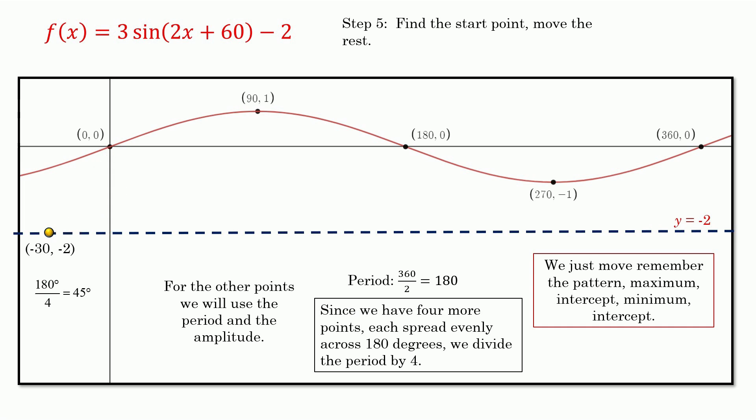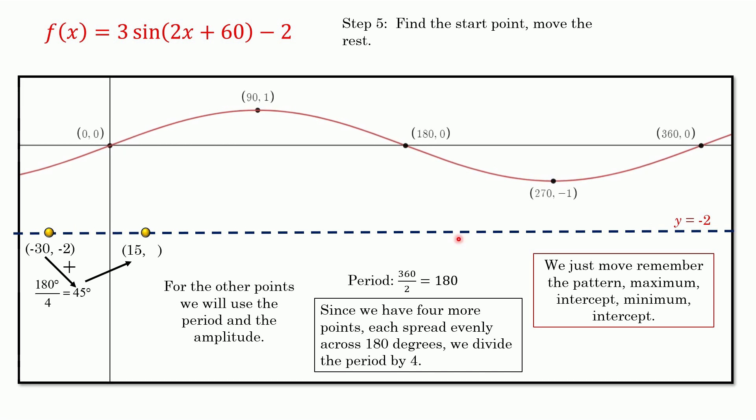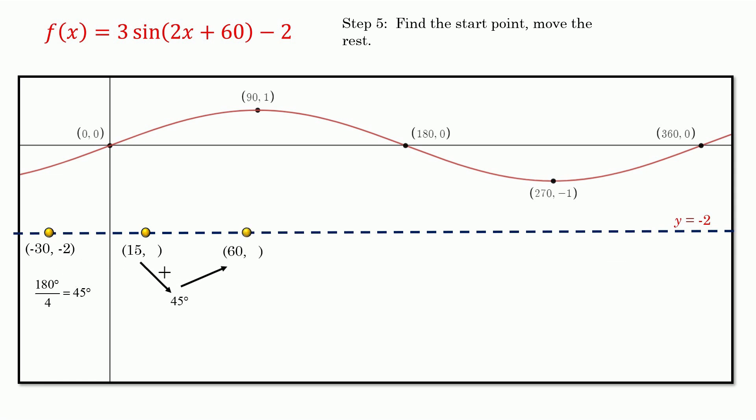You just take that first point, you just found the starting point, and you're going to add 45 degrees to the x. Negative 30 plus 45 is 15. Wash, rinse, repeat. You're going to do the same thing. Find all the other points where they are on the x-axis. 15 plus 45 is 60. 60 plus 45 is 105. And 105 plus 45, again, is 150 degrees. So those are our points.